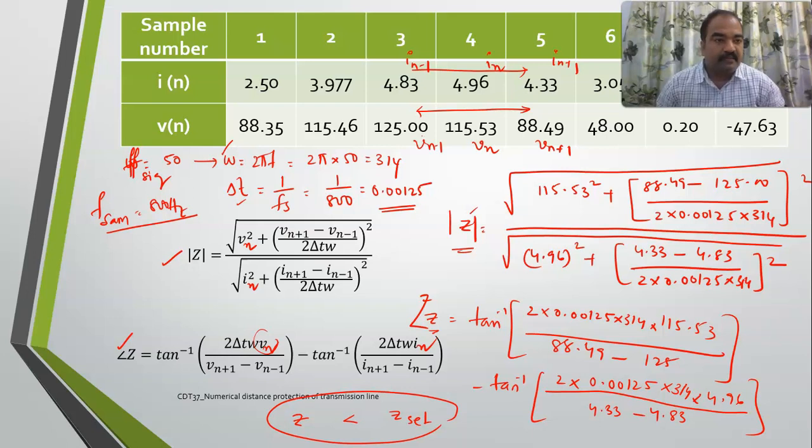I will be asking problems on determining the impedance using Mann and Morrison method and compare it with the set value, so whether the relay is giving a tripping signal or not. With this I am closing this session. We will meet again in the next class to discuss about one more method of determining the impedance - we call it the differential equation method. Thank you.